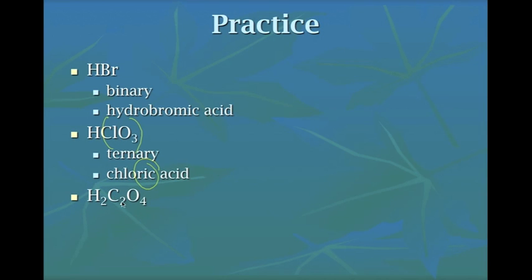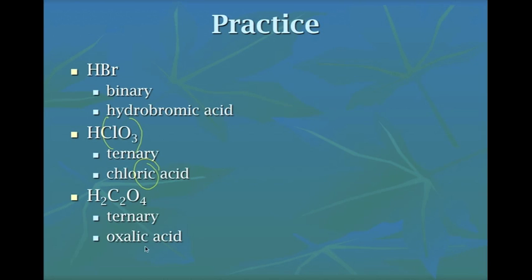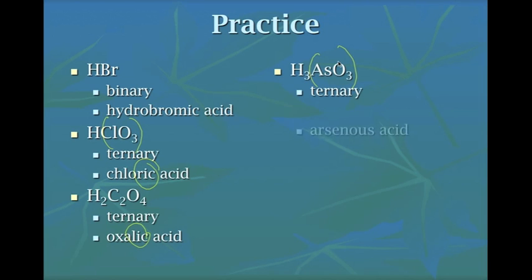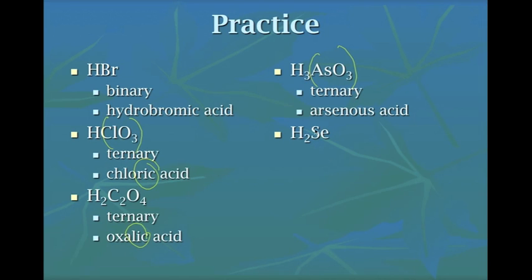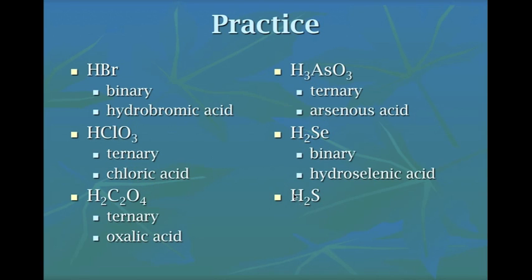Hydrogen bonded to C2O4 is a ternary acid. C2O4 is oxalate, which changes to oxalic acid. H3AsO3 is arsenite — a ternary acid — change '-ite' to '-ous' to get arsenious acid. H2Se: selenium is just an element, so it's a binary acid — hydro selenic acid. Hydrogen bonded to sulfur alone is also binary, giving hydrosulfuric acid.